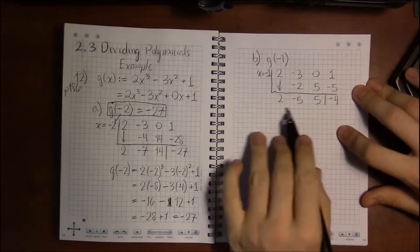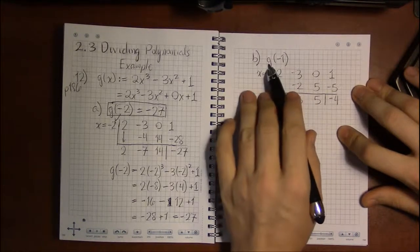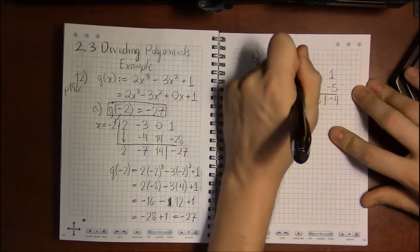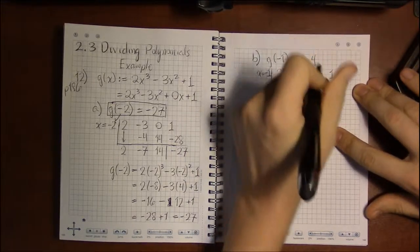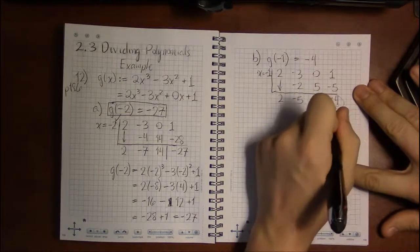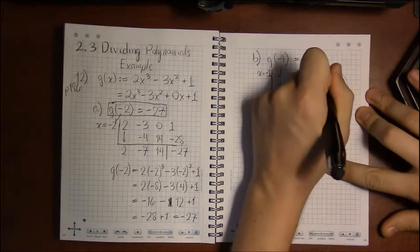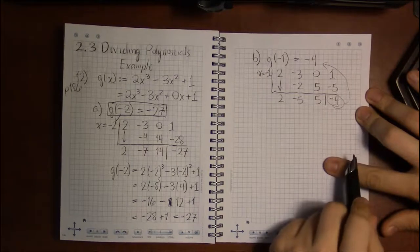Now again, since we just care about what g of minus 1 equals, the remainder theorem guarantees us that the remainder is what g of minus 1 equals.